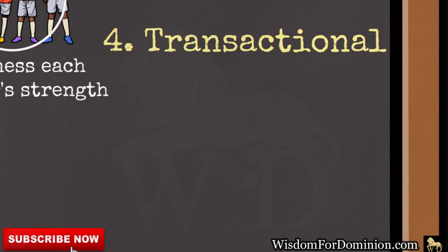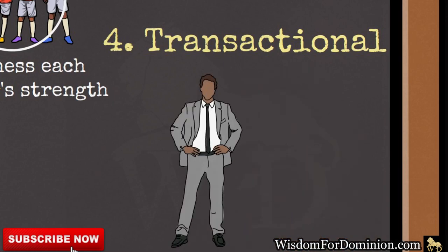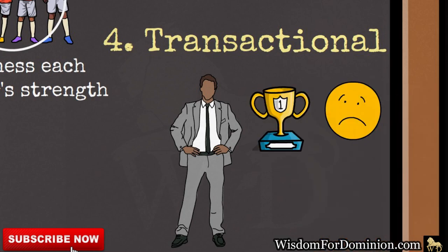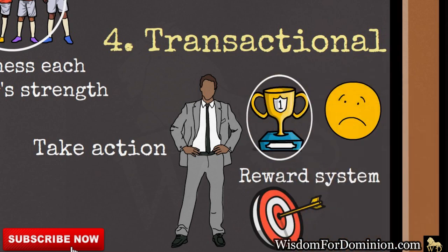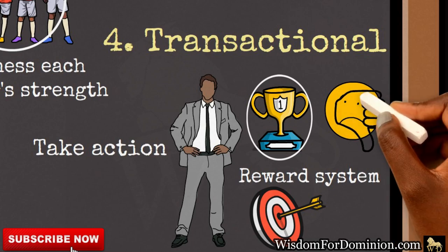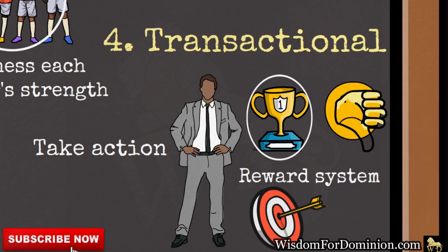Number 4: The Transactional Leadership Style. This is very common with managers because it has to do with two things: rewards and punishment. This leadership style focuses on inspiring the people you are leading to take action, to become the best, to become more productive through a reward system. For example, if you attain your monthly target, you get a bonus. If you don't attain your monthly target, you get a penalty — or if you come late, you have a penalty. This aims at maintaining and accelerating the status quo's effectiveness.